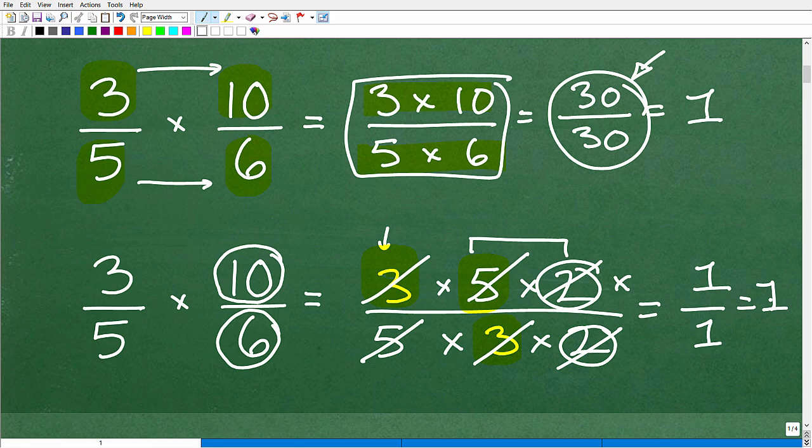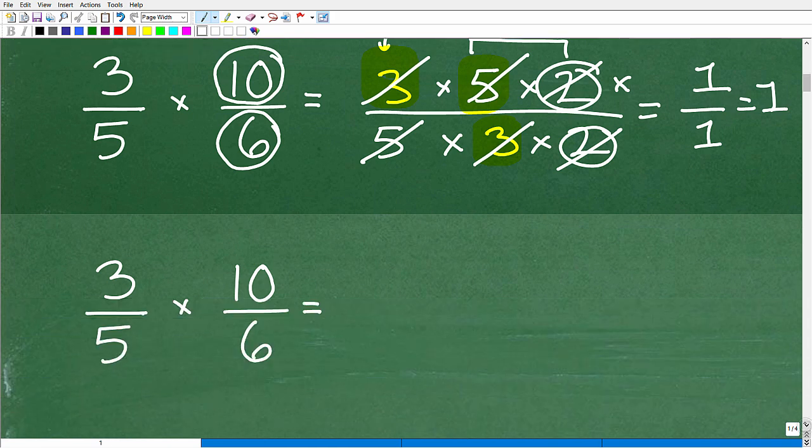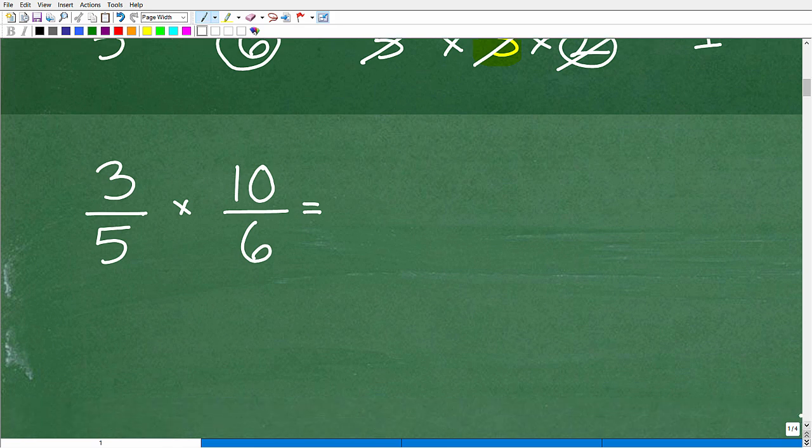So when you're multiplying fractions, you want to look for opportunities for cross-cancelization as well. But still, the technique or the procedure is still the denominator, the respective denominators being multiplied by one another and the respective numerators. Now let's think of this problem in this manner. Same problem.